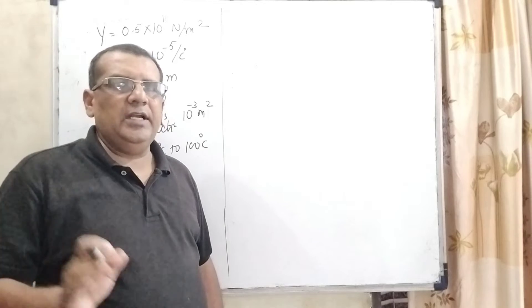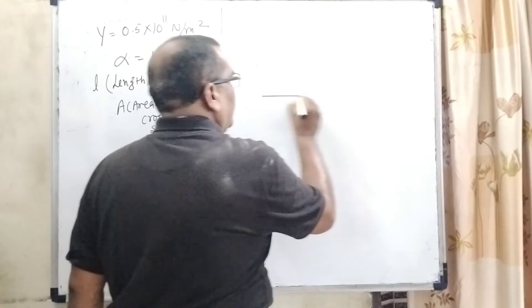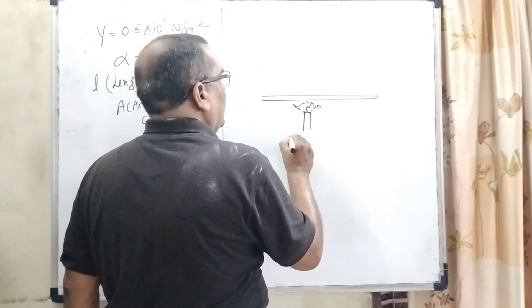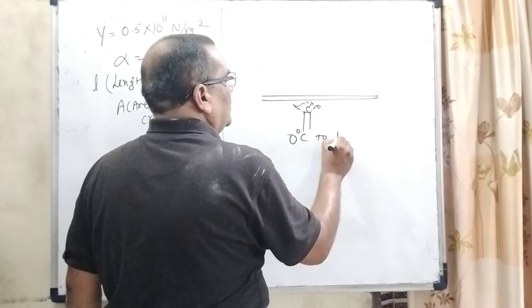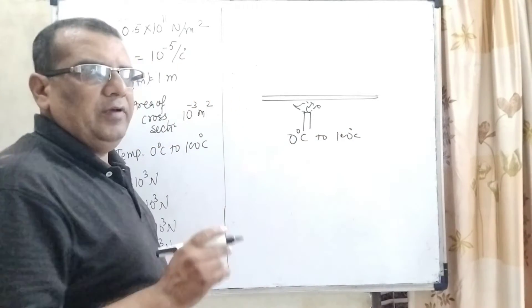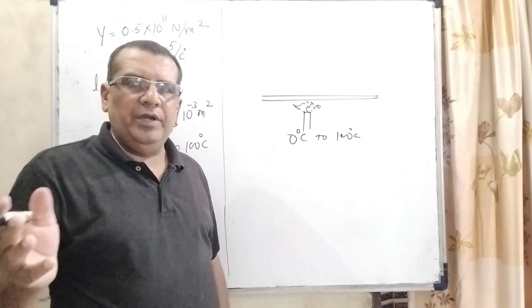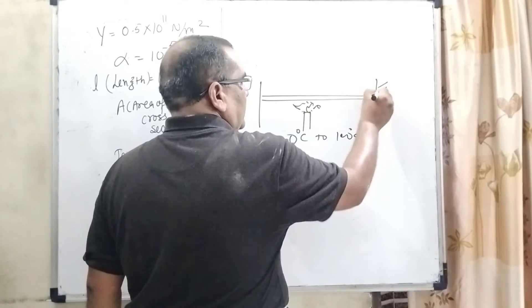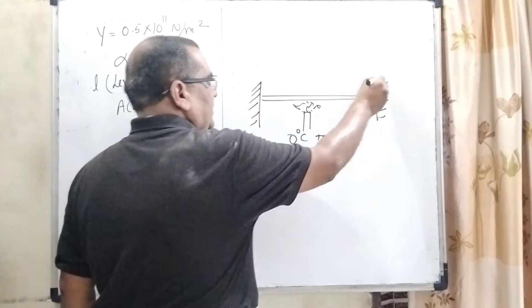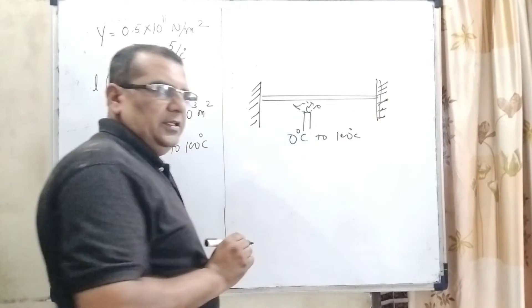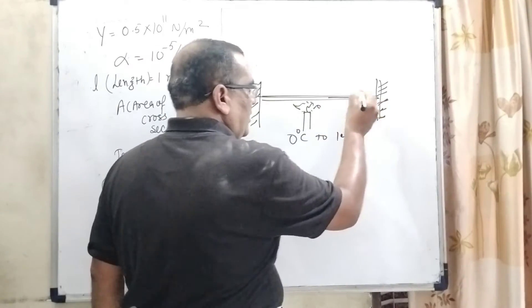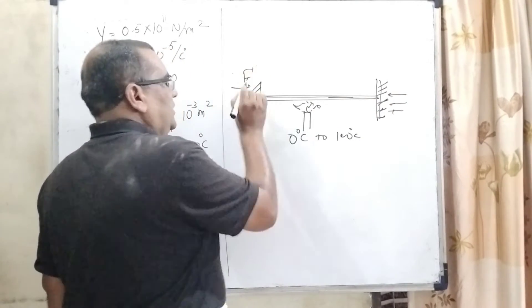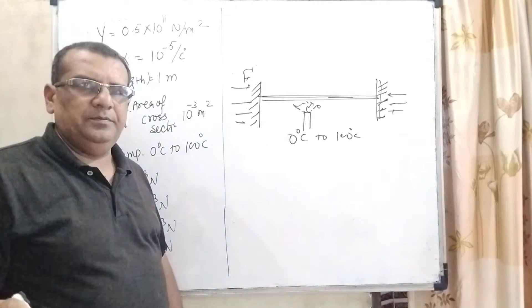Firstly, we have to understand what the question says. Here we have given a rod. It is being heated, rising the temperature from 0 degree Celsius to 100 degree Celsius. As we know that whenever we heat any object, it expands. But here, some force exerts on it. We can say that there is some rigid support or wall that stops it from bending or expanding. So here, we have to calculate this compressive force. It is our key point of this question.